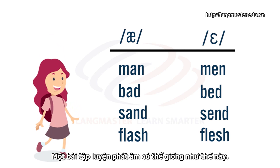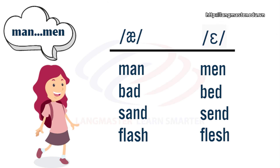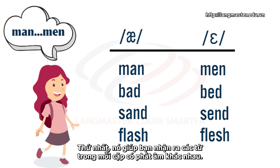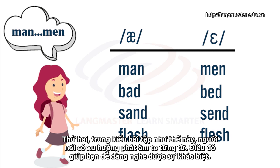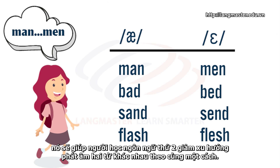These exercises contrast one sound with another. Here is what such an exercise might look like — this exercise contrasts the A sound with the E sound. This kind of exercise has three key benefits. Firstly, it makes you aware that the words in each pair are pronounced differently. Secondly, the presenter tends to exaggerate when pronouncing words, making it even easier to hear the differences. And lastly, since similar words are presented together for comparison, it reduces the tendency for non-native speakers to pronounce two different words the same way.